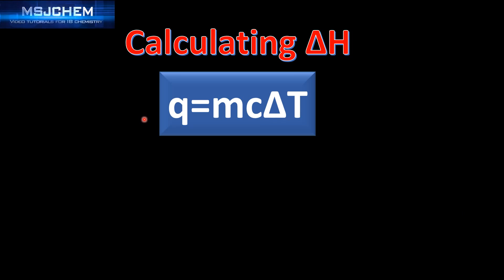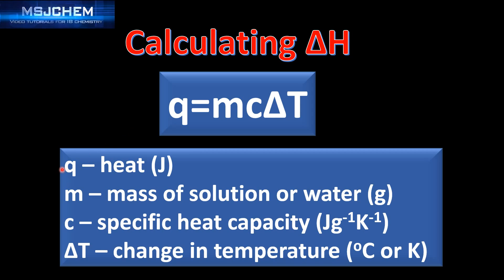Next we'll have a look at the equation Q equals MC delta T. Q stands for heat, which is measured in joules. M stands for the mass of the solution or the water, measured in grams. C is the specific heat capacity, and delta T is the change in temperature measured in degrees centigrade or Kelvin.